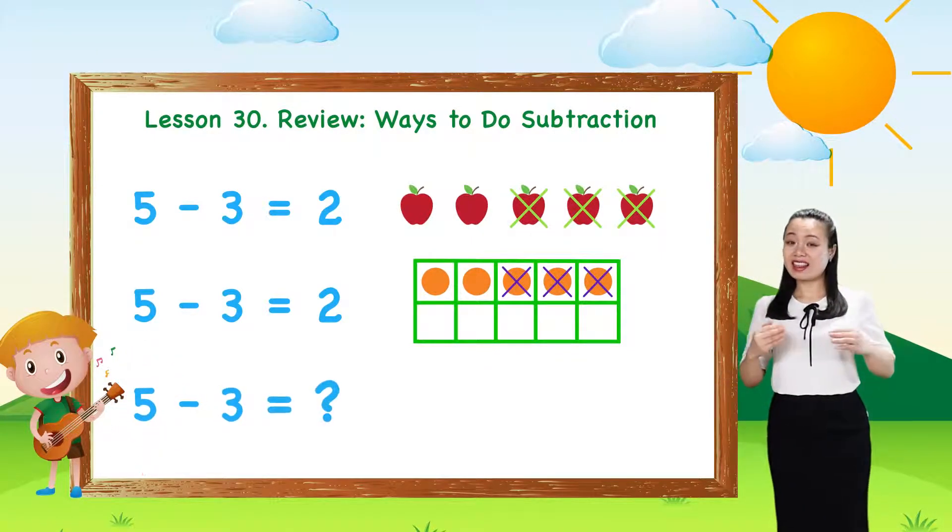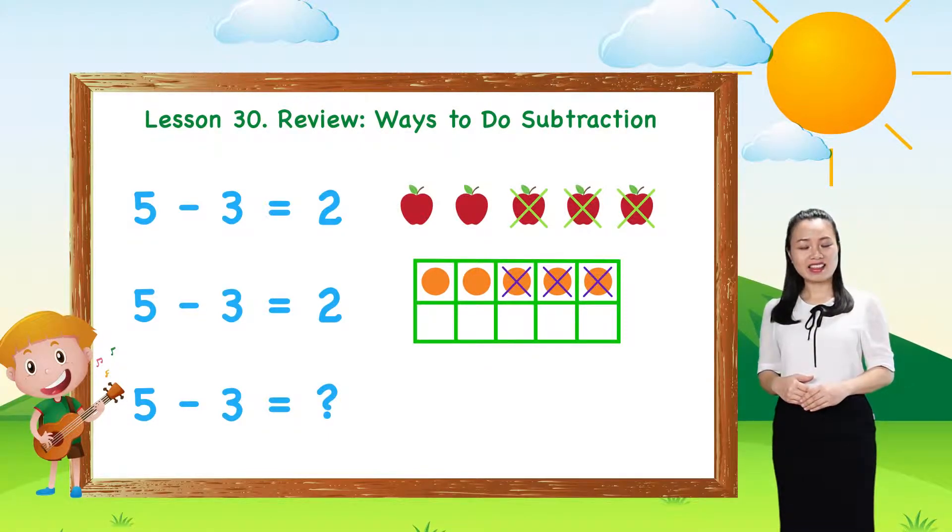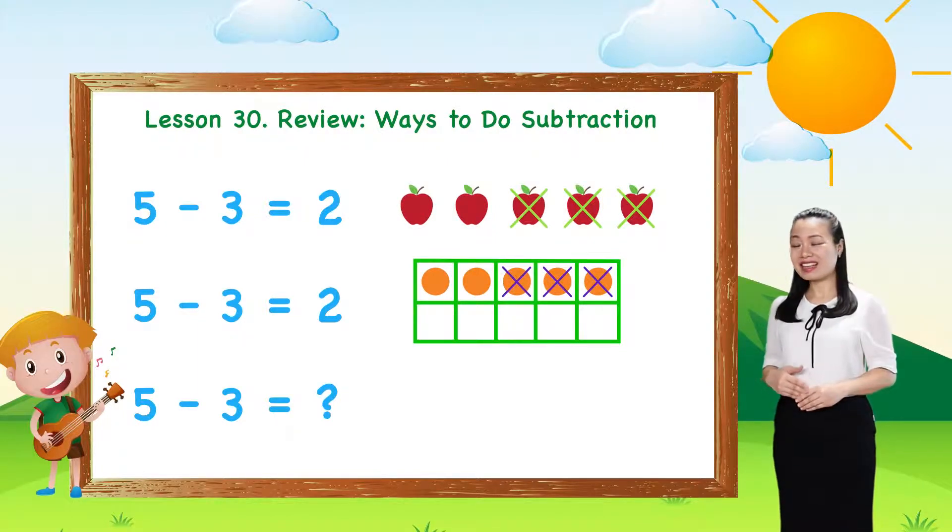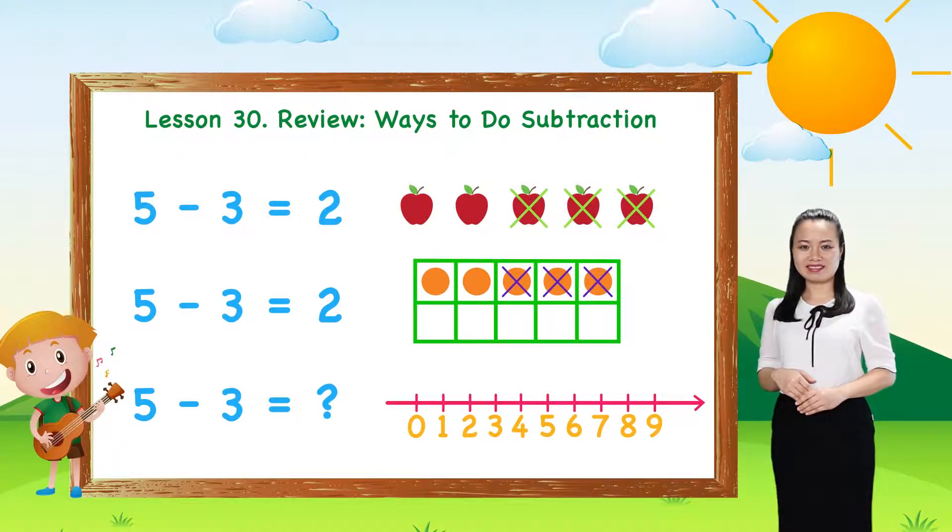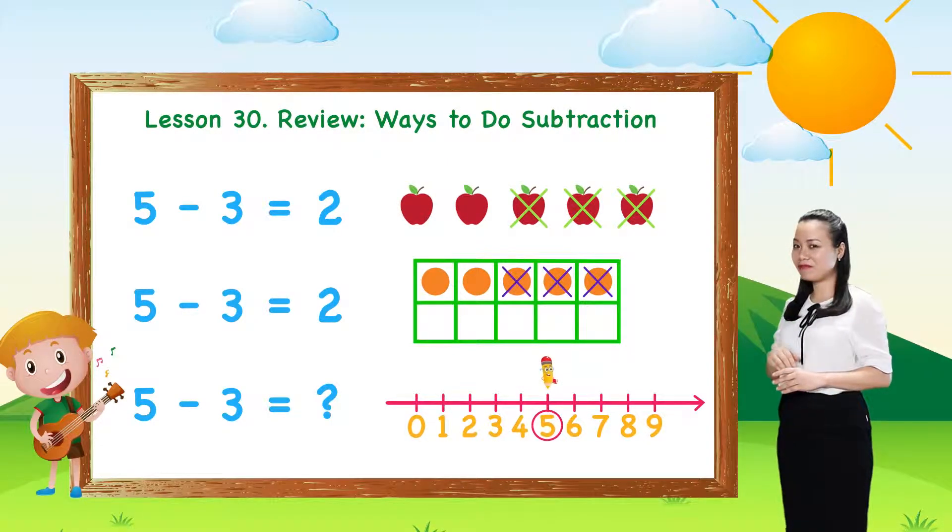What is the third way you think of? The third way I do is I use the number line. Start from number 5.